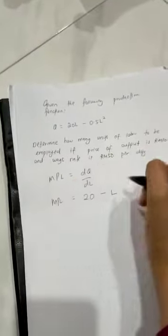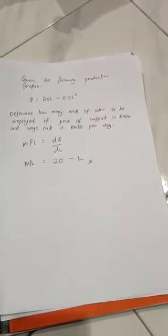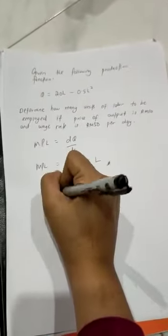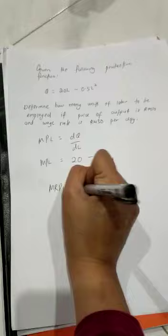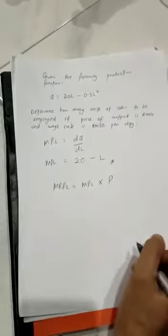This is MPL. To find the extra revenue generated by labor, we calculate MRPL, which equals MPL times price.